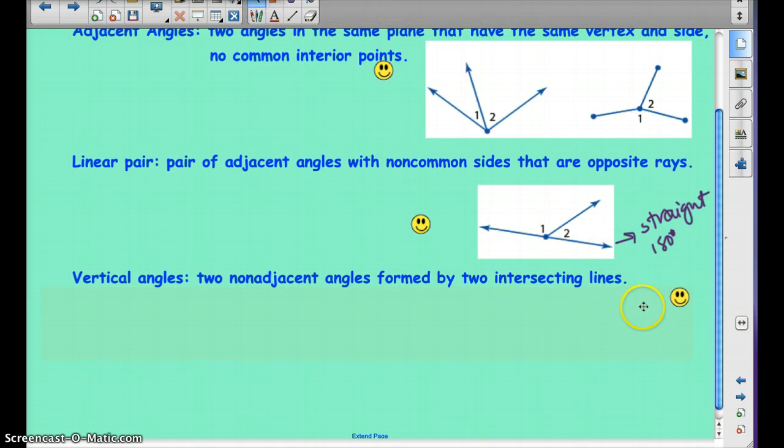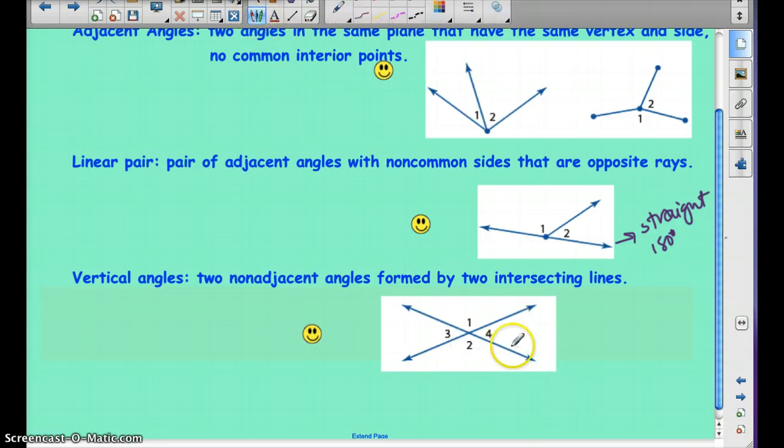The next one, vertical angles, two non-adjacent angles formed by two intersecting lines. So look here, we have two intersecting lines. So one and two are vertical angles, angle one and angle two, and angle three and angle four are vertical angles. Now the cool thing about vertical angles is they're always congruent to one another. So angle one is congruent to angle two, and angle three is congruent to angle four. And I must say, vertical angles are my favorite type of angles. Pause the video when needed.